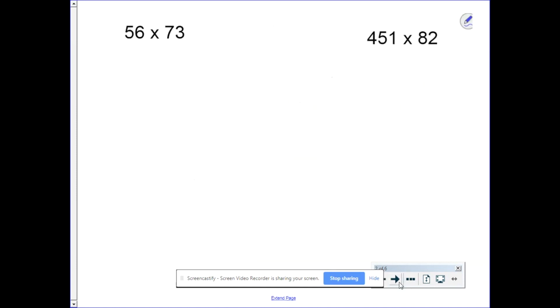Let's do two more examples. 56 times 73. The first number is 50 and 6. The next number is 70 and 3. Let's make our boxes.